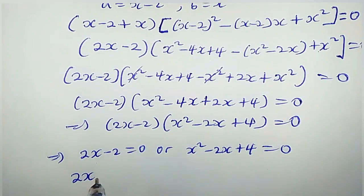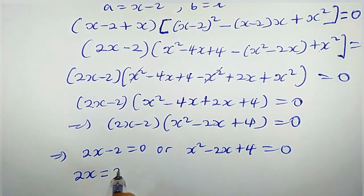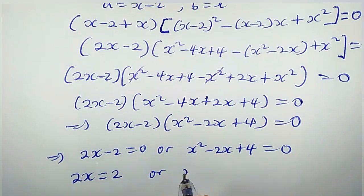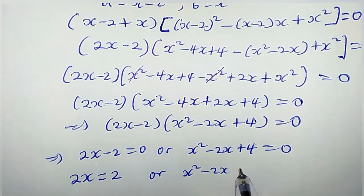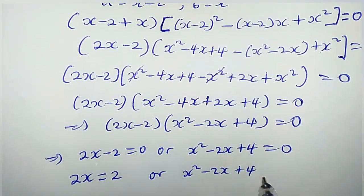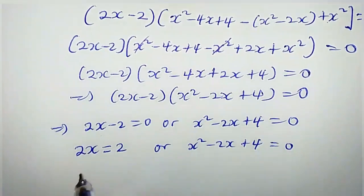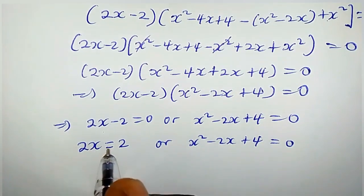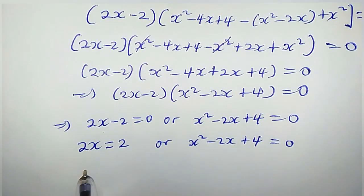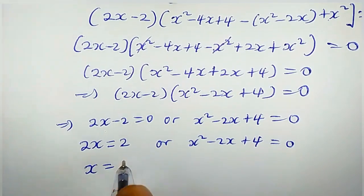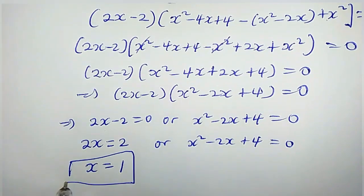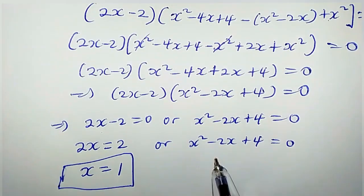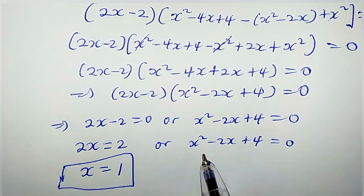This implies that 2x minus 2 equals zero, or x squared minus 2x plus 4 equals zero. When 2x minus 2 equals zero, dividing both sides by 2 gives x equals 1. This is one solution. We observe that this quadratic equation cannot be factorized over the set of real numbers, so let us use the quadratic formula.